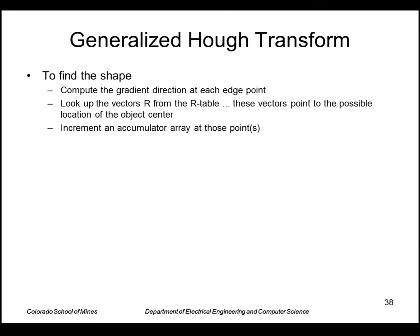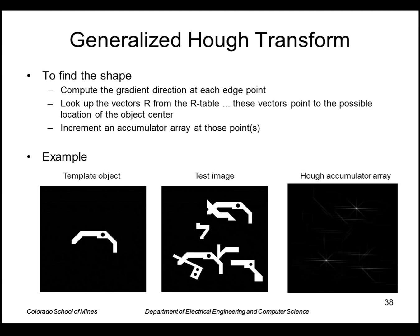To find the shape, we compute the gradient direction at each edge point, look up the vectors from the R-table — which point to the possible center — and then increment the accumulator array at those points. Here's a synthetic example: we construct the R-table from a template object, then apply it to a test image containing a couple of those objects. The accumulator array specifies the object centers, and we look for peaks in it — in this case, there are two.